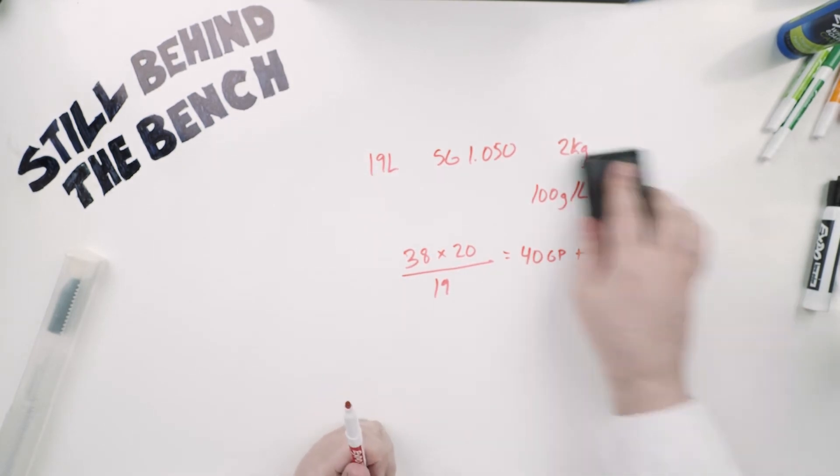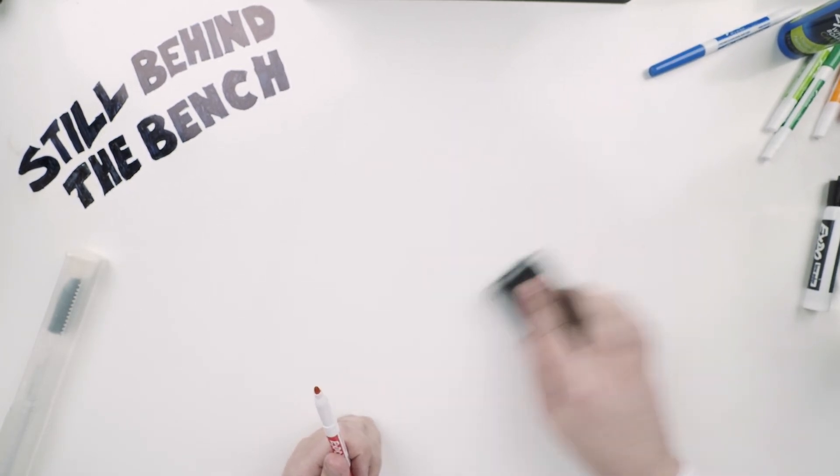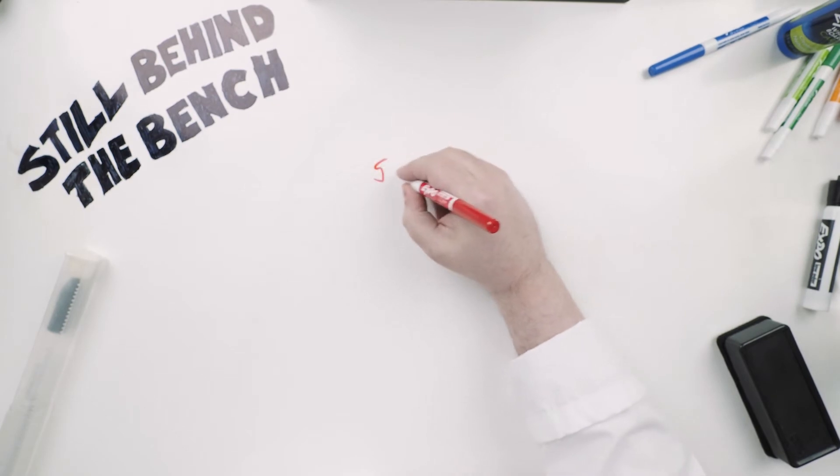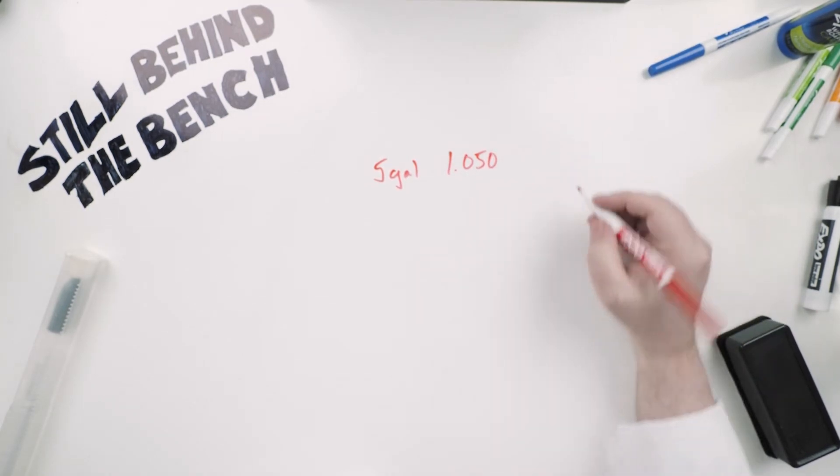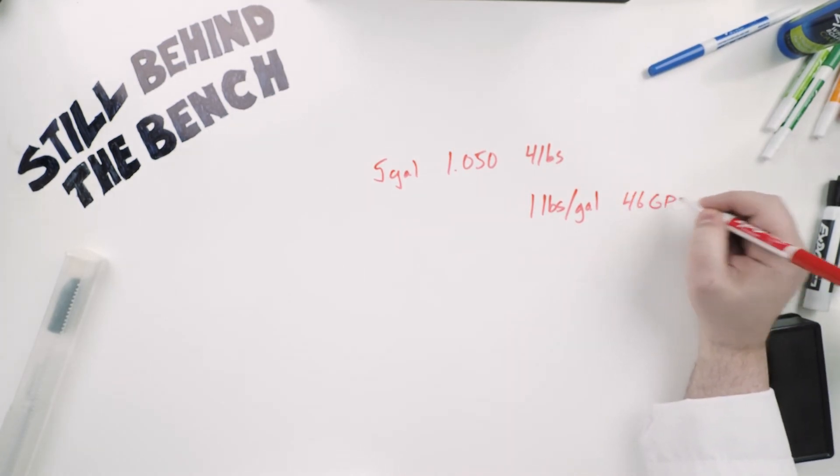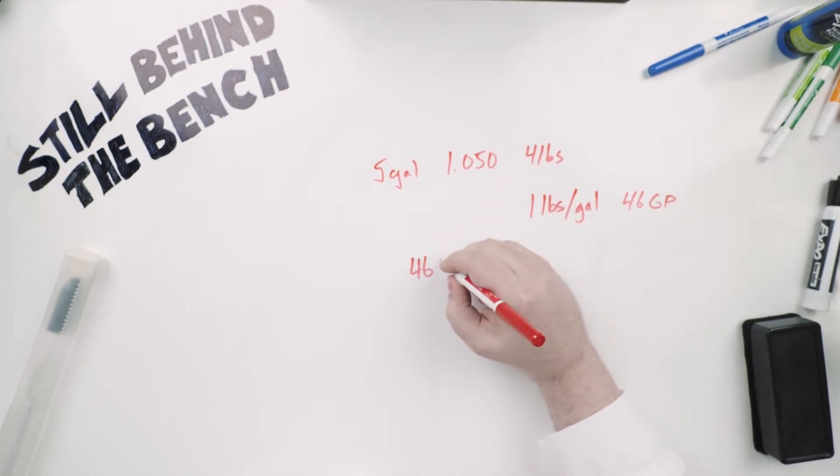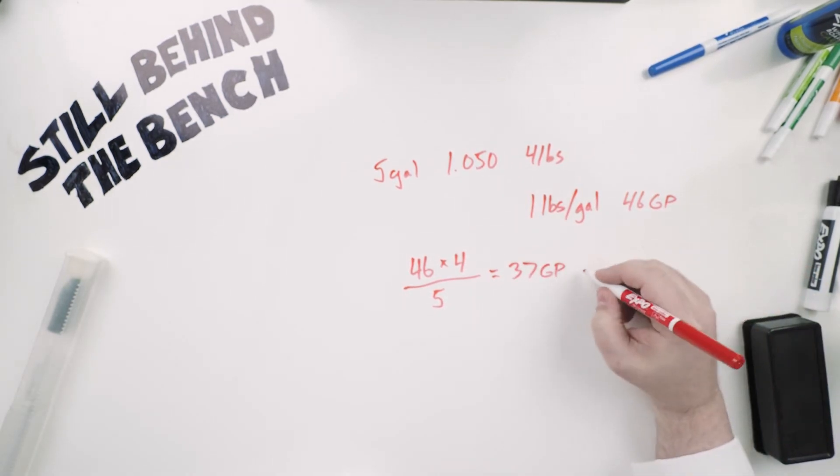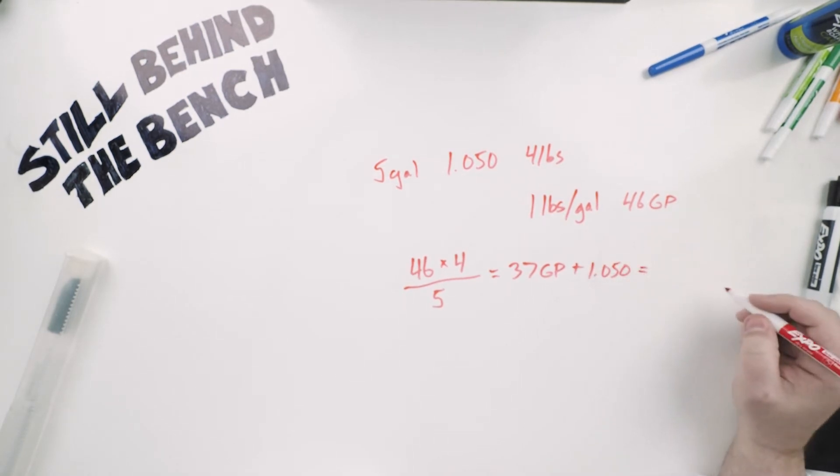Now let's do this in imperial. Let's say you have 5 gallons and it's at 1.050 and you have 4 pounds of sugar you want to add. Think of it like this. For every one pound per gallon of sugar you get 46 gravity points. So you take 46 times it by 4 pounds and then divide that by 5 gallons. You get 37 gravity points. Add that to the original 0.050 and you get a total of 1.087. Easy peasy.